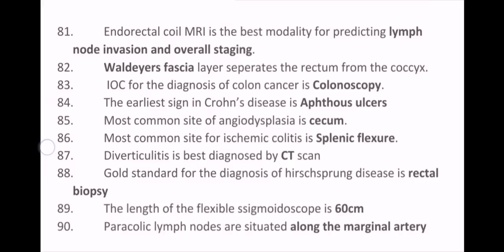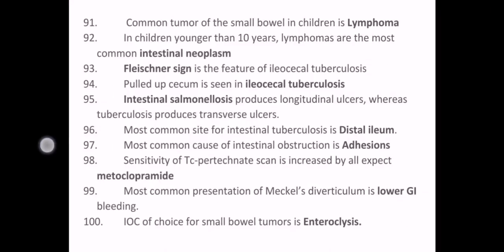Diverticulitis is best diagnosed by CT scan. The gold standard for the diagnosis of Hirschsprung's disease is rectal biopsy. The length of the flexible sigmoidoscope is 60 cm. Paracolic lymph nodes are situated along the marginal artery. The most common tumor of the small bowel in children is lymphoma; in children younger than 10 years, lymphomas are the most common intestinal neoplasms. Fleischner's sign is a feature of ileocecal tuberculosis. Pulled-up cecum is seen in ileocecal tuberculosis. Intestinal salmonellosis produces longitudinal ulcers, whereas tuberculosis produces transverse ulcers. The most common site for intestinal tuberculosis is the distal ileum.